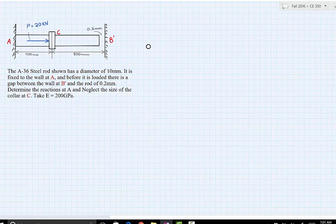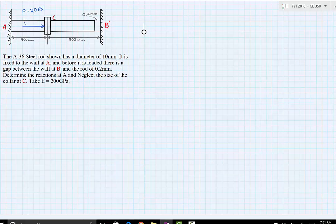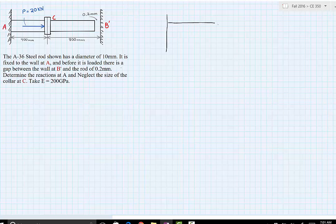So what we'll do first is draw our diagram showing that we'll have the rod as if there was no fixed support on the right. Here's my collar and only the loading P, which is our 20 kilonewtons.